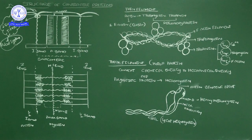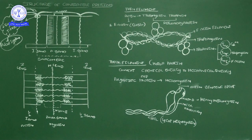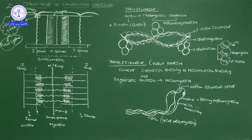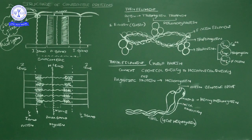That is about the thin filament. Now, the thick filament — it indicates the dark band. The protein in the thick filament is called a motor protein. Why is it called a motor protein? In 10th standard you studied sensory neurons and motor neurons. Sensory neurons receive stimulation and send information to the brain; the brain analyzes and sends signals via motor neurons. Here similarly, motor proteins indicate a resulting function.